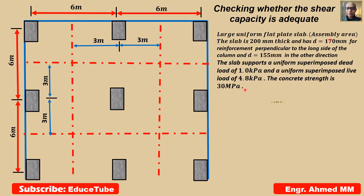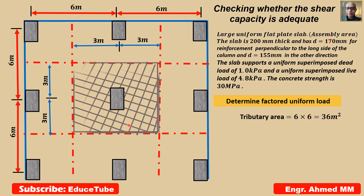The factored uniform load. To get this, I need tributary area. Tributary area 6 by 6. Now I need to find factored uniformly distributed load, WF.